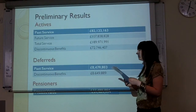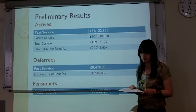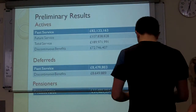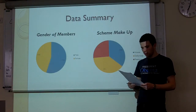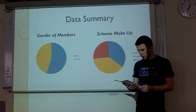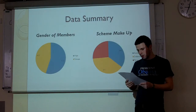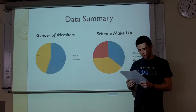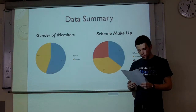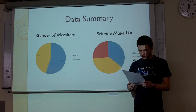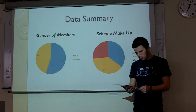After running Superbill, here are our preliminary results. This shows a breakdown of the funding for each of the 3 categories: Actives, Deferreds, and Pensioners. We are now going to summarize the data in relation to our XYZ scheme. Here is how the scheme is divided in relation to gender of members and types of pensions. The scheme contains 968 members split into 3 categories: Actives, who are those currently employed by the company; Deferreds, who are those no longer employed but have not yet reached retirement; and Pensioners. As you can see from the chart, the majority of the scheme is made up of deferreds.